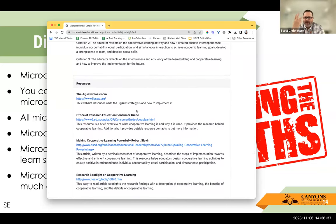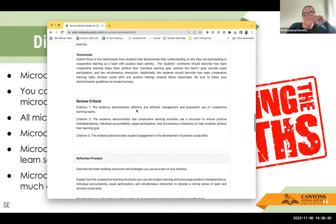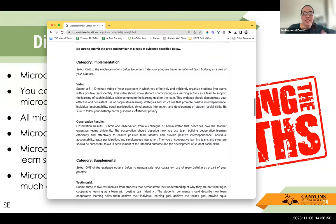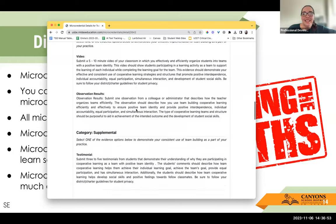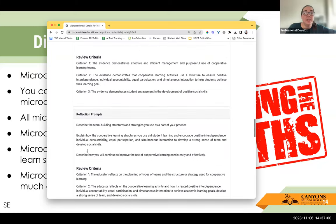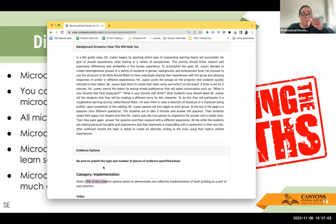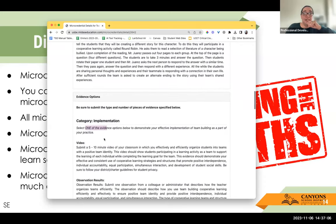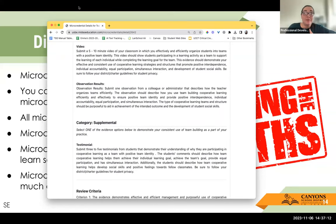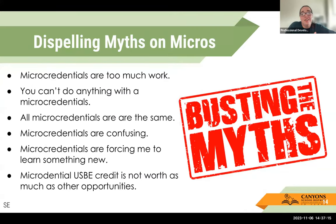We're talking about three things again. For this cooperative learning one, it's actually asking you to submit just one piece of evidence — one of those options — and then the reflection prompts. So we're really talking about submitting one thing that I guarantee you've already done. And maybe you've never organized a jigsaw, but it's not supposed to be something that's super overwhelming.